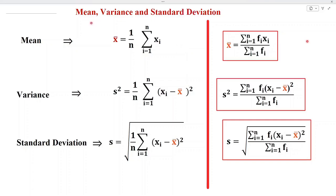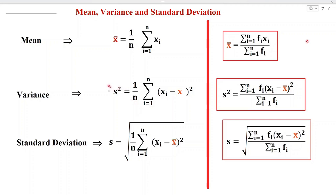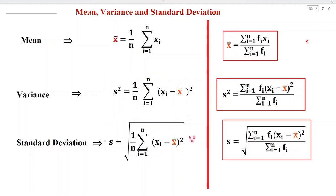In this video, we shall find mean, variance and standard deviation. Let us revise that the mean is denoted by x-bar and it is equal to sum of all observations divided by number of total observations. Variance s-square is given by this formula and standard deviation is the positive square root of the variance.